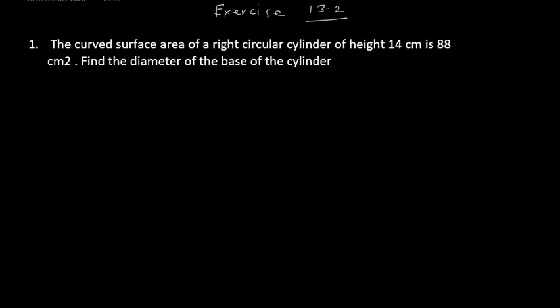So let us first discuss a concept. This is how your cylinder looks like. Now sometimes you will find it is written as a right circular cylinder. Now what do you mean by right circular cylinder? It is your cylinder only. When I say right circular cylinder, that means the base of the cylinder is perpendicular to the height, so when you put it on the ground it will stand vertically.